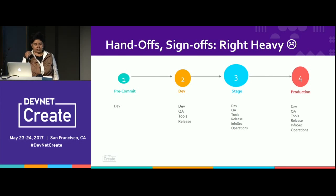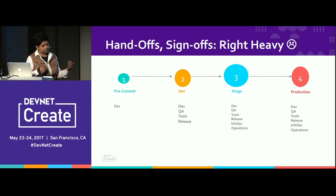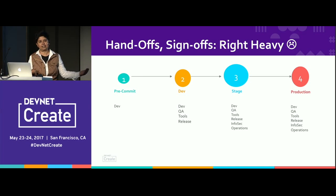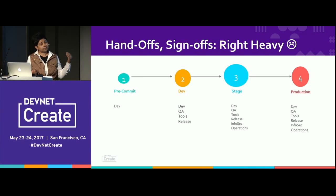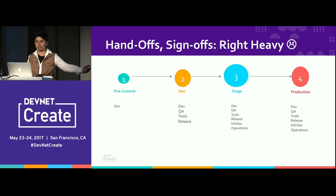Hand-offs, sign-offs — you must have seen the pattern tends to be right-heavy. The more things happen at the end, the worse off we are. The more people who get involved at the end, it's more expensive and we find problems late in the pipeline.